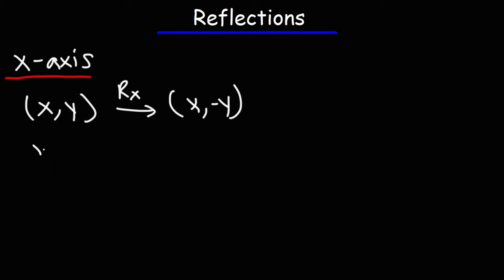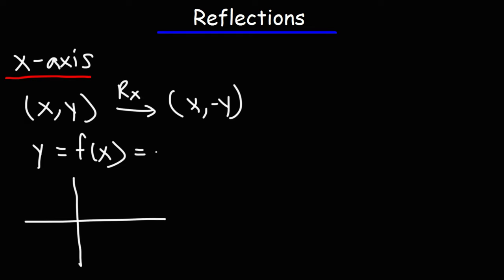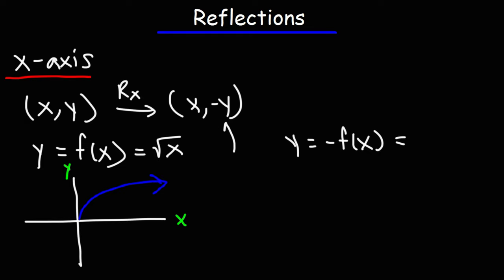We can illustrate this with a graph. Let's say we have a function y = f(x), where f(x) is the square root of x. When we reflect that graph over the x-axis — keep in mind the x-axis is a horizontal line, the y-axis is the vertical line — we're going to put a negative sign outside of the function f, close to y, because the y-values change. So this is going to be negative square root of x, and it's going to reflect over the x-axis.